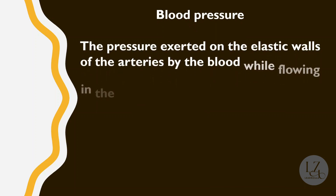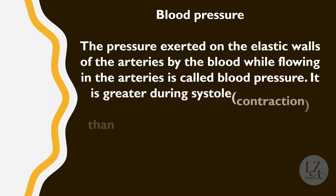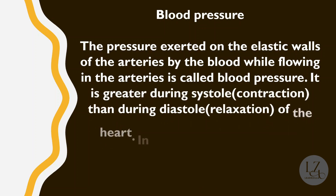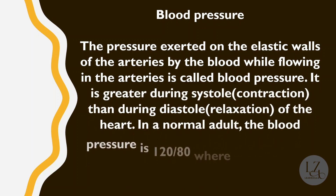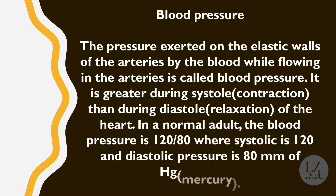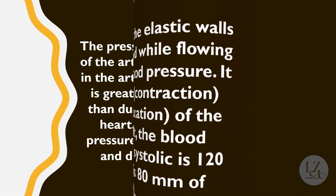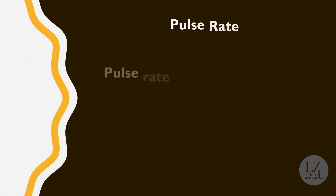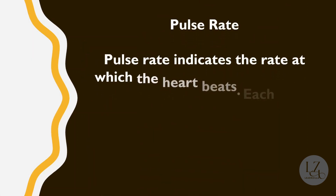The next important term is blood pressure — the pressure exerted on the elastic walls of the arteries by the blood while flowing in the arteries. It is greater during systole, which is contraction, than during diastole, which is relaxation of the heart. In a normal adult, blood pressure is 120/80, where systolic is 120 and diastolic pressure is 80 mmHg.